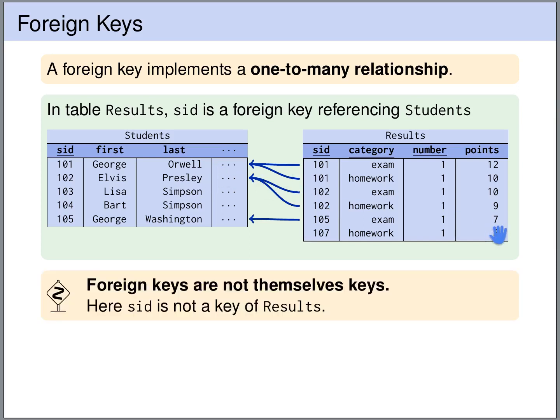It's important to understand that foreign keys are not keys themselves. In the results table, the SID does not uniquely identify the row — we have multiple rows in the results table with the same SID.